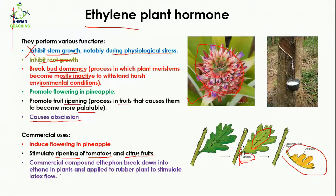Another commercial application involves ethephon, which breaks down into ethylene when it enters the plant. When applied to rubber plants, it stimulates latex flow. Here you can see the rubber plant and the white milky material — that is the latex — whose flow is stimulated by ethylene.